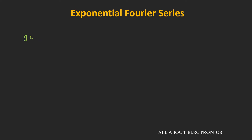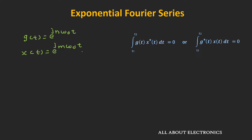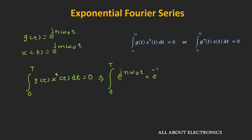Let's say we have two signals: e to the power jnω0t and e to the power jmω0t. For these signals to be orthogonal, either of the orthogonality conditions should be satisfied, where ω0 equals 2π divided by T. To check that, we integrate e^(jnω0t) times the complex conjugate e^(−jmω0t) from 0 to T, which we can write as the integral from 0 to T of e^(j(n−m)ω0t) dt.